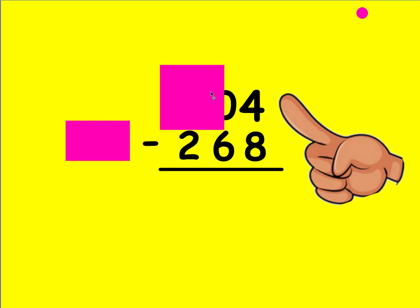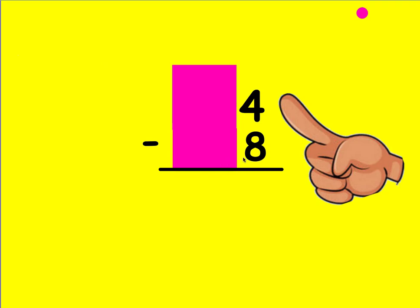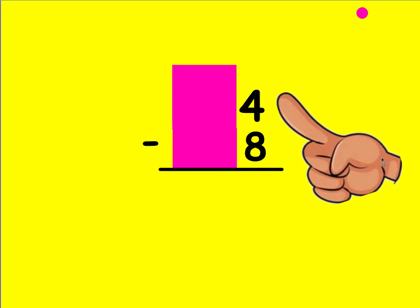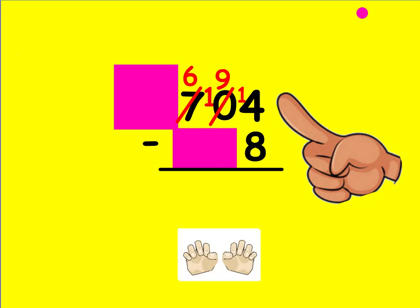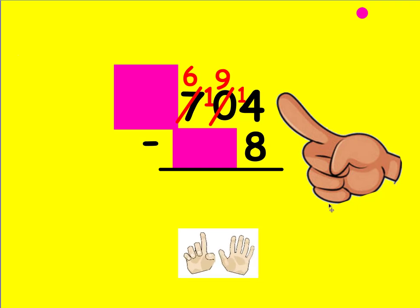Now we're going to try this one. Cover up everything but the place value you're working with. Is the top number bigger than the bottom? No, it's not — you need to borrow. Move over and look only at its neighbor. Can you borrow? No. So that neighbor goes to its neighbor — can it borrow? Yes, from the 7. Mark out the 7, make it a 6. The borrowed 1 goes directly behind, making that number 10. Go back to the ones place — now can it borrow? Yes. Mark out the 10, make it a 9, and put the 1 directly behind it. Count up from 8 to 14: 9, 10, 11, 12, 13, 14. That was 6.